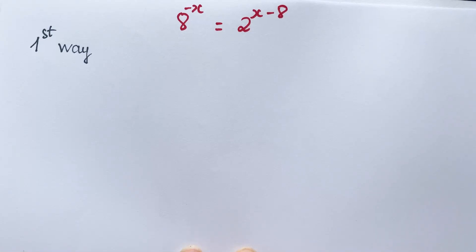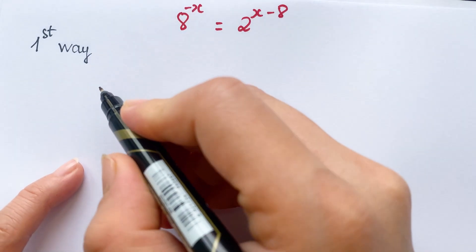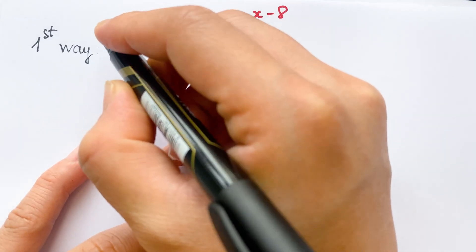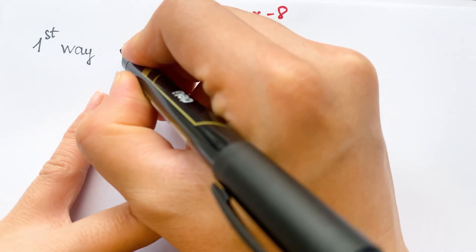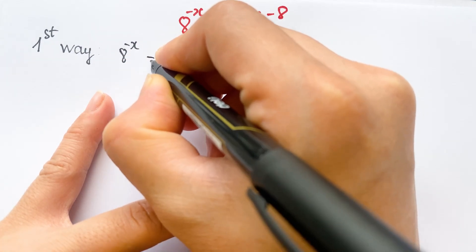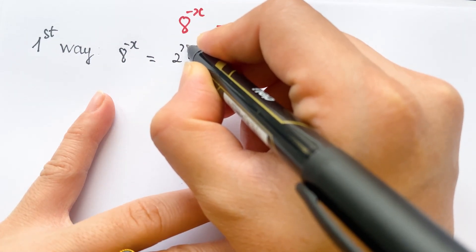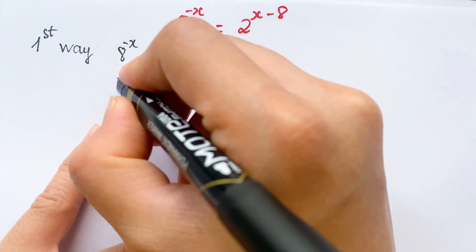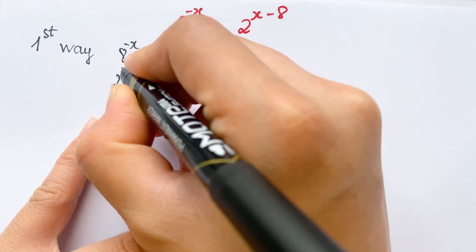Hello. How to find the value of x in the equation — everyone can see the equation. We can solve this in three ways. For the first way, you can rewrite 8 as 2 cubed, so 8 power minus x equals 2 power x minus 8, and you can rewrite it as 2 cubed whole power minus x equals 2 power x minus 8.